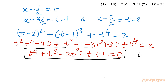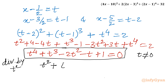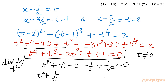Dividing by t² gives: t² + t - 2 - 1/t + 1/t² = 0. Now I group the first and last terms together: (t² + 1/t²), then the second and second-last terms: (t - 1/t), then minus 2 equals 0.